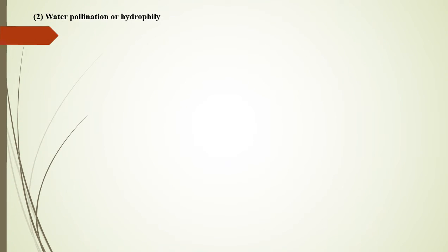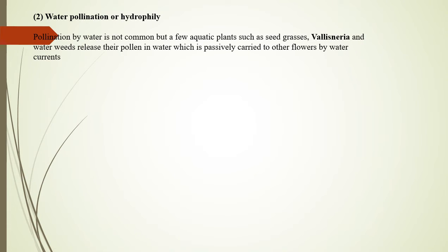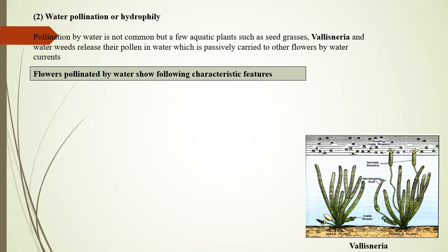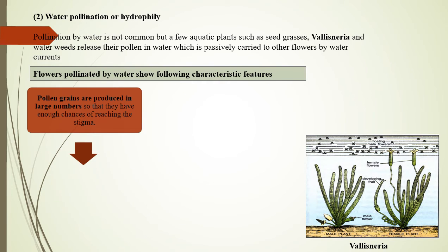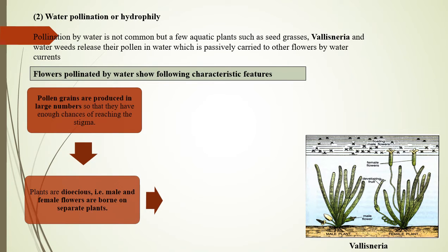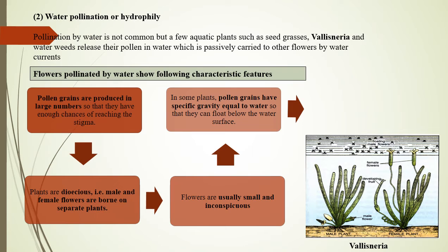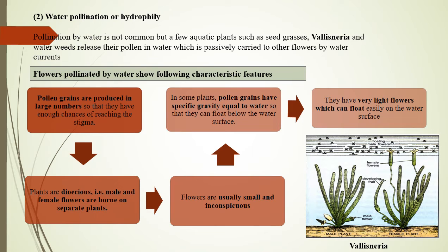Water pollination or hydrophily: Pollination by water is not common, but a few aquatic plants such as sea grasses, Vallisneria, and water weeds release their pollen in water, which is passively carried to other flowers by water currents. Flowers pollinated by water produce pollen in large numbers, are dioecious (male and female flowers on separate plants), are usually small and inconspicuous, and in some plants pollen grains have a specific gravity equal to water so that they float below the surface. They also have very light flowers which float easily on the water surface.